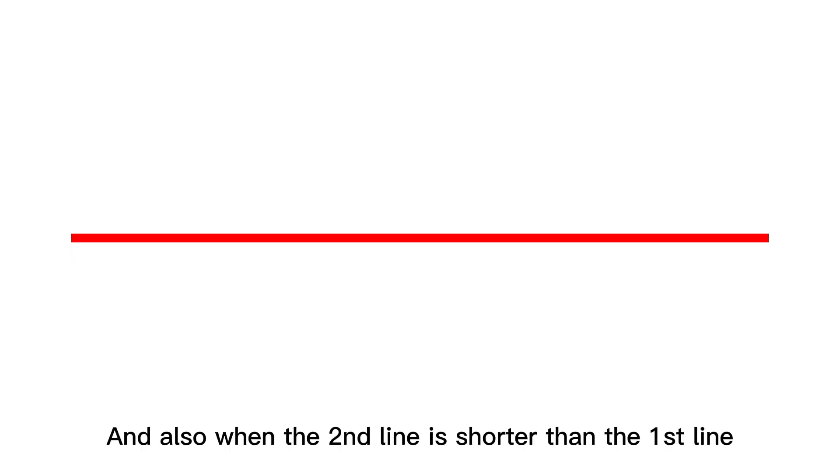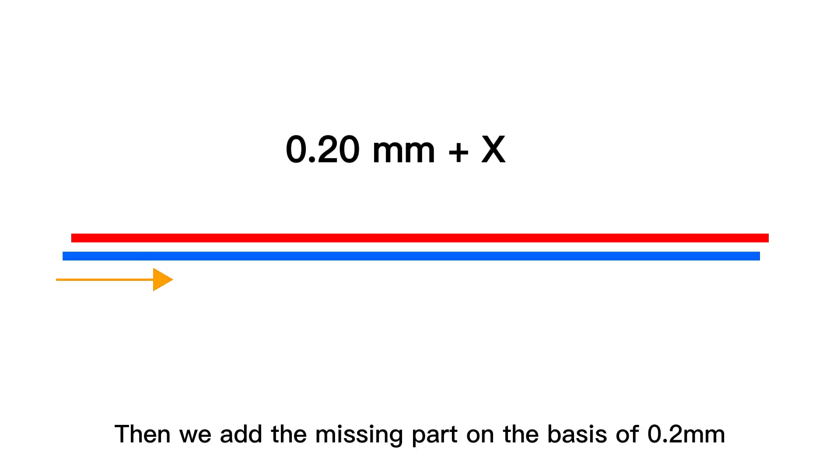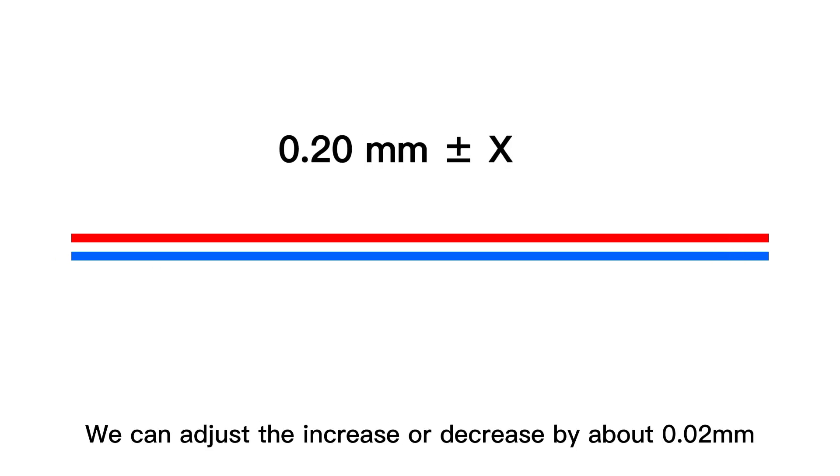When the second line is shorter than the first line, we add the missing part on the basis of 0.2mm. Generally, we can adjust the increase or decrease by about 0.02mm.